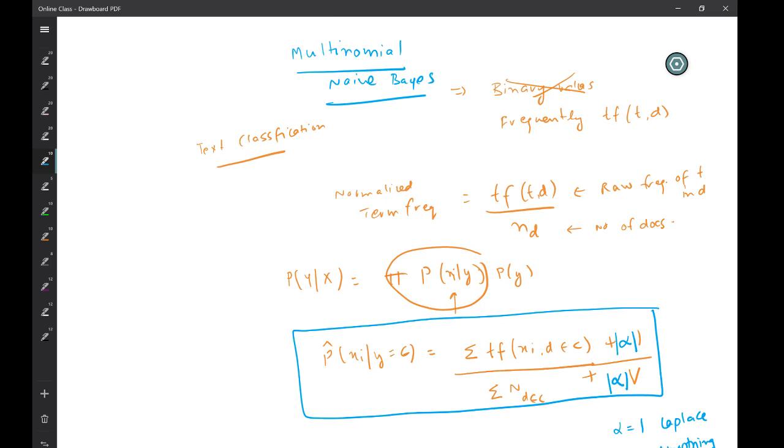This is the formula that we use in multinomial naive Bayes while computing the conditional probabilities. And in the next video we will talk about how we can handle or make multinomial naive Bayes using TF-IDF.